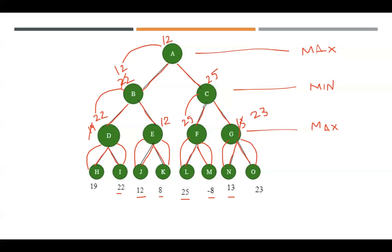Now we traverse towards the left and right side of this node C. Among 25 and 23, which is the minimum value? The minimum value is 23, so that value is replaced with 25.